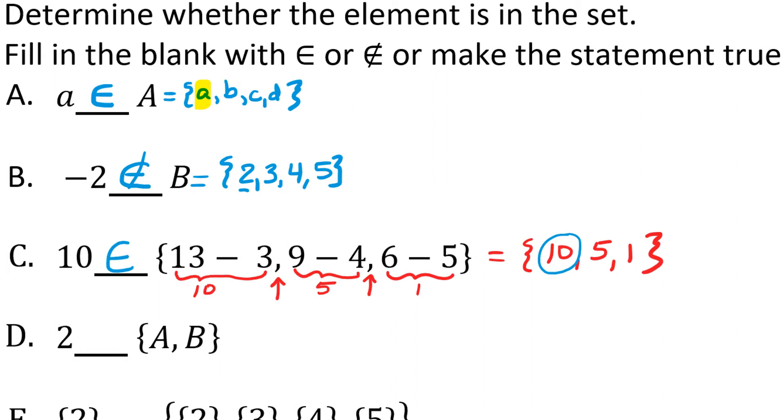Now this next one is maybe a little trickier. It says, is 2 an element of the set containing the set A and the set B. So I bet you didn't realize that sets can be elements of other sets. This is a set of sets. We could have written this particular set of sets as the set containing, and then instead of A, we could have written a, comma b, comma c, comma d, comma, and then the set containing 2, 3, 4, 5 instead of the B there.